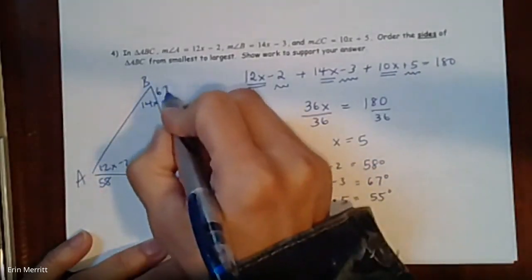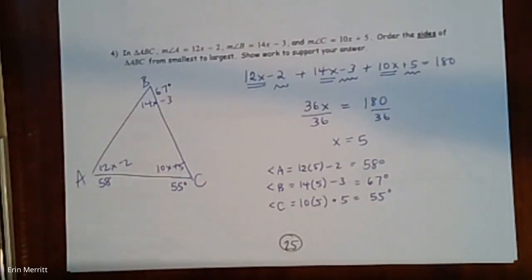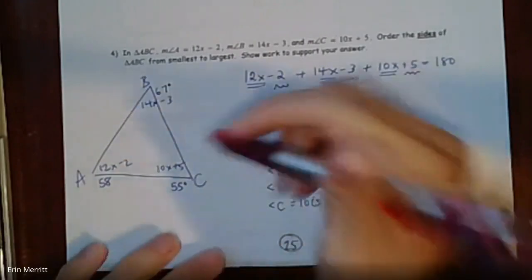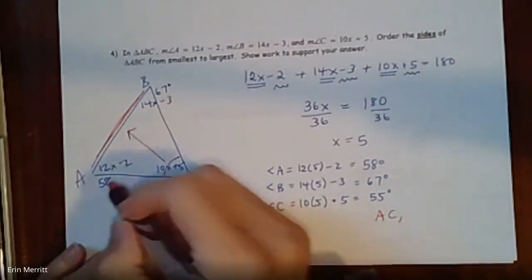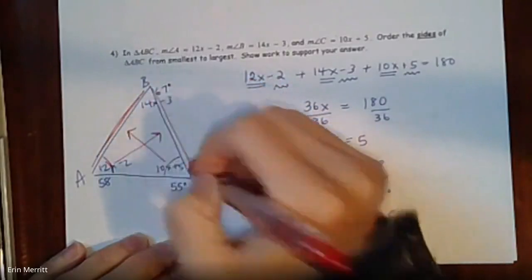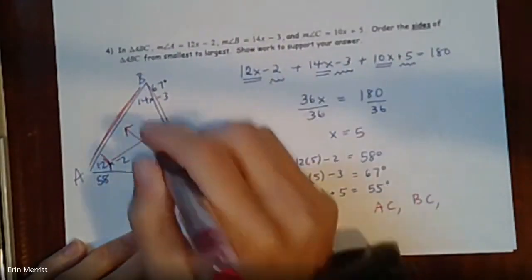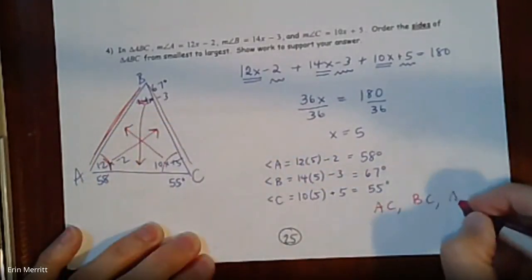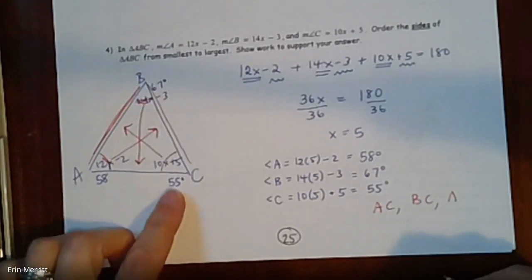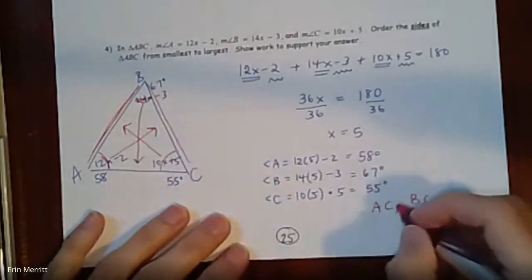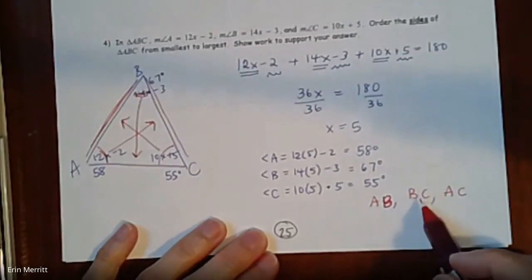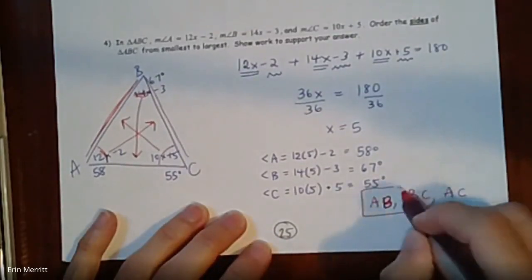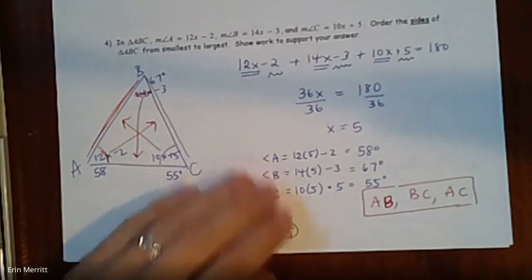Now ordering the sides from smallest to largest: the smallest angle is C at 55 degrees, so the opposite side AB is smallest. The medium angle is A at 58 degrees, so side BC is medium. The largest angle is B at 67 degrees, so side AC is the largest. The order from smallest to largest is AB, BC, AC.